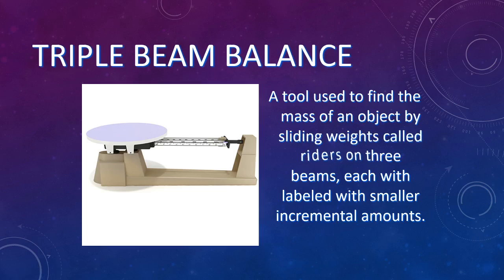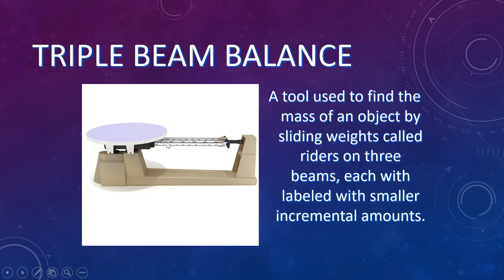Then we have a triple beam balance. You place your object on the pan, and there are three beams — that's why it's called a triple beam. Each beam measures a different amount: one goes up by ones, one by tens, and one by hundreds. You move what is called a rider on each of the balance beams until the beam is level, and when it's level you know how much your object weighs.